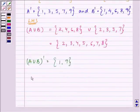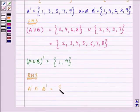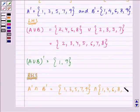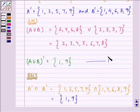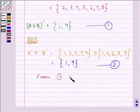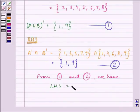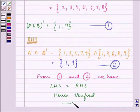Similarly, we will find out the RHS: A'∩B'. Write down A complement: {1, 3, 5, 7, 9}, intersection B complement: {1, 4, 6, 8, 9}. The elements common to both are {1, 9}. So from equation 1 and 2, LHS equals RHS, and we can write: hence verified. This completes the first part.